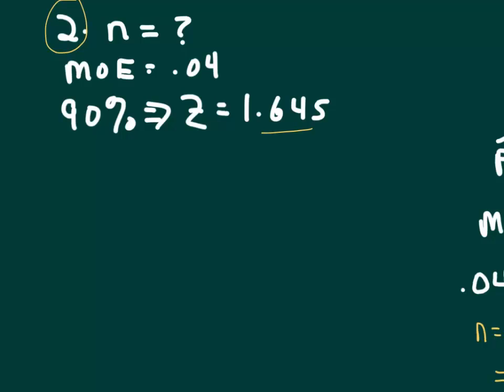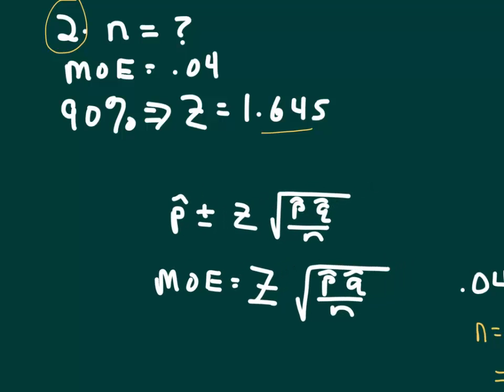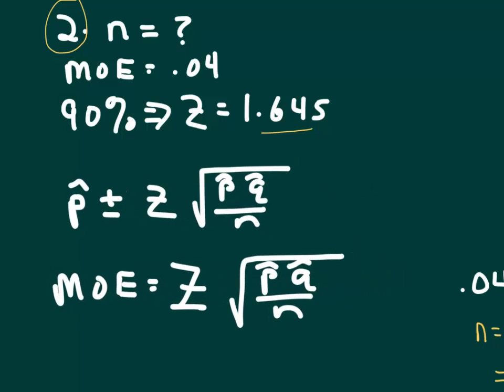In this problem, we're trying to estimate our population proportion, and so that confidence interval is p hat plus or minus z times the square root of p hat q hat over n. So again, as we did in the last one, margin of error is equal to the right hand side of the confidence interval formula. And again, we have MOE, that's given. We have a z value, which we can get from the level of confidence.